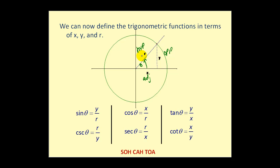Essentially we use the same relationships as before: sine theta would be opposite over hypotenuse, but now the opposite side is y and the hypotenuse is r, so sine theta equals y over r. Cosine theta, instead of adjacent over hypotenuse, is now x over r. And tangent theta, instead of opposite over adjacent, is now y over x.